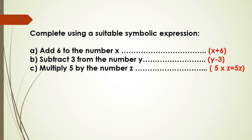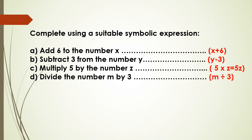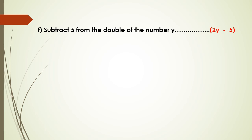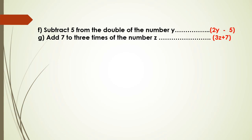Multiply 5 by the number, so it will be 5 times that number. Divide the number m by 3, so it will be m divided by 3. Add 3 to the double of x — the double of x means 2x — so it will be 2x plus 3. Subtract 5 from the double of the number y — the double of y is 2y — so the answer is 2y minus 5.